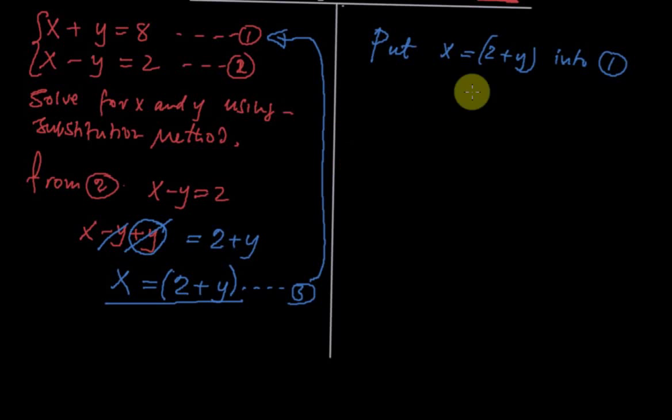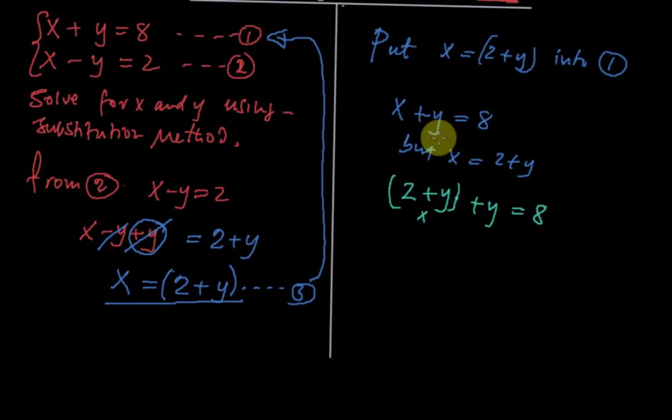So okay, we put this into equation 1. We have x plus y equal to 8, but the value of x equals this. So x plus y equal to 8, but we know what is x, equal to 2 plus y. So we have as our new question here: 2 plus y, this is for x, then plus another y equal to 8. This is the one which is here.